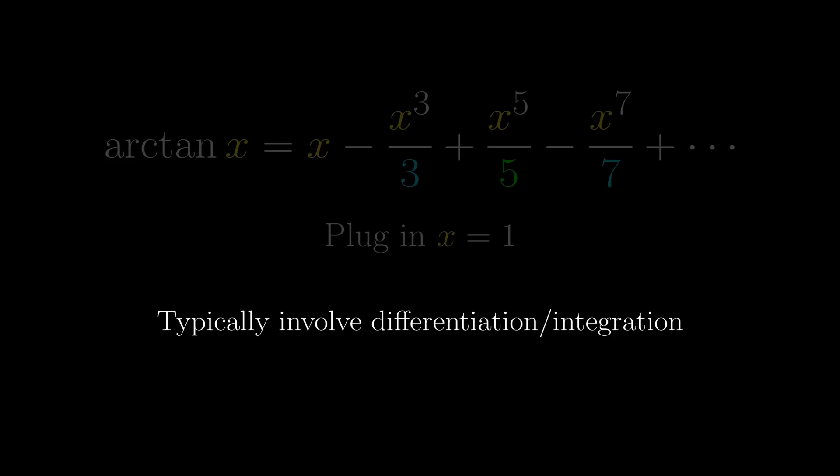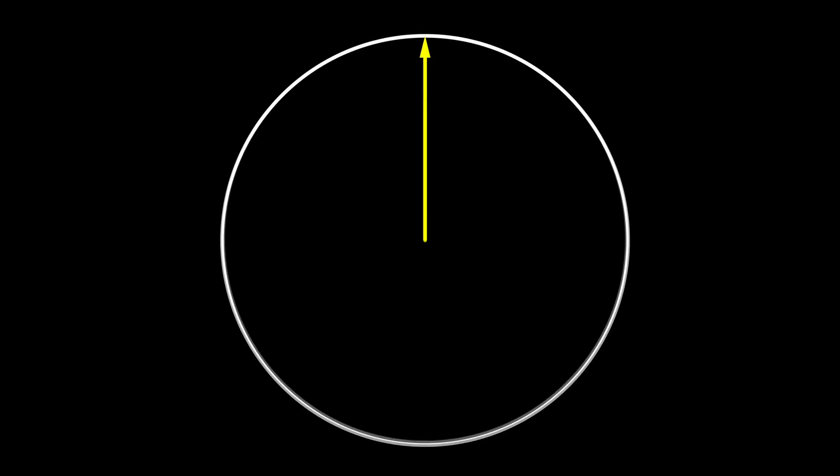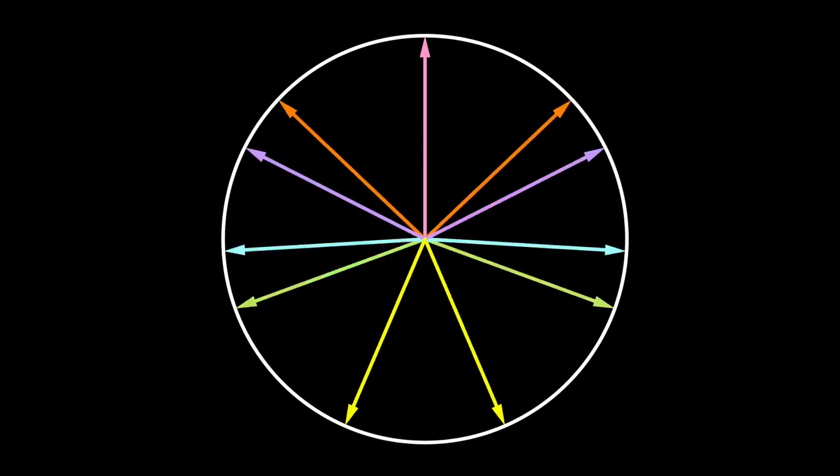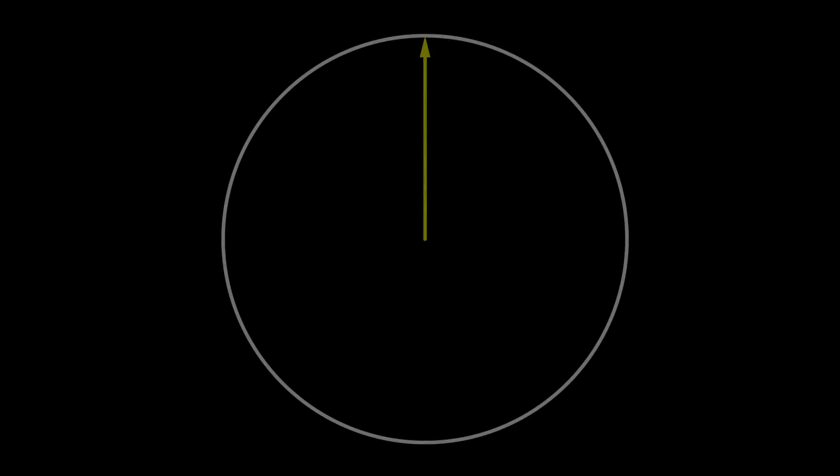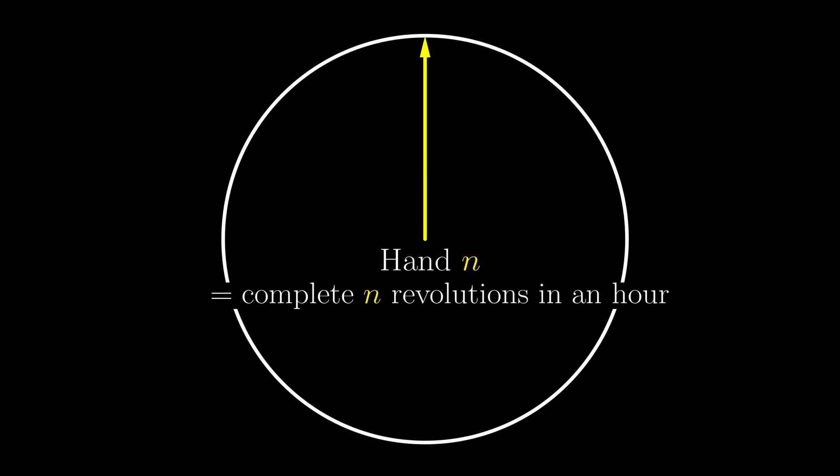The answer is yes, and it starts with a clock, or rather, a clock with an infinite number of hands. I know that looks dizzying, but let's see what the infinite hands are about. We are going to label the hands by an integer n, which means this hand will complete n revolutions per hour. For example, this is hand 0. It completes 0 revolutions per hour, i.e. it doesn't move at all.